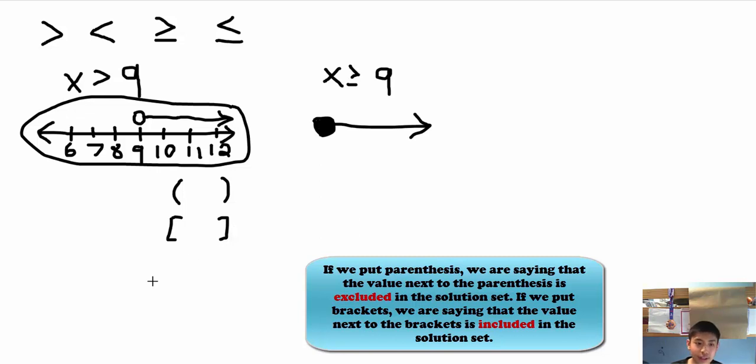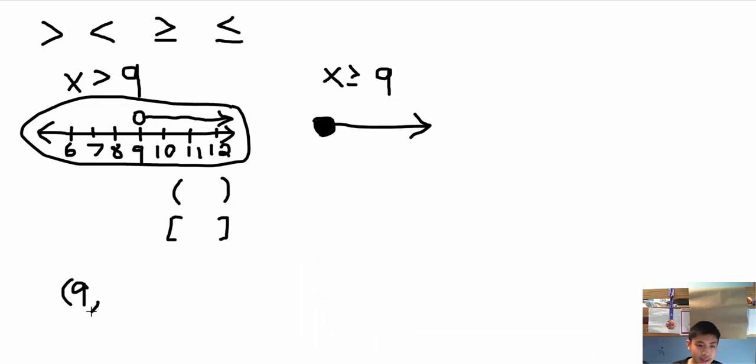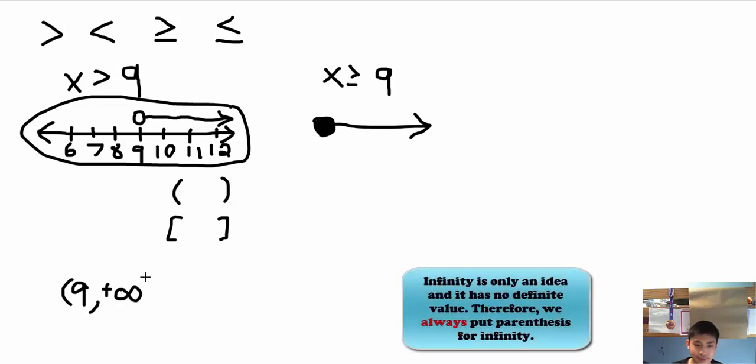So for x is greater than 9 we can say parentheses 9 since the solution set does not include 9 and positive infinity since it goes on to positive infinity. Now for infinity we always use parentheses since it is only an idea, there's no definite value for infinity, so that's just a rule we use parentheses for infinity.